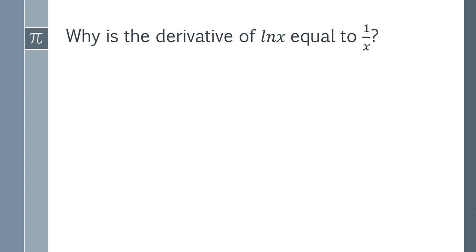In this video I'm going to answer the question, why is the derivative of ln(x) equal to 1 over x? And to do this we need to rely on two very fundamental properties.